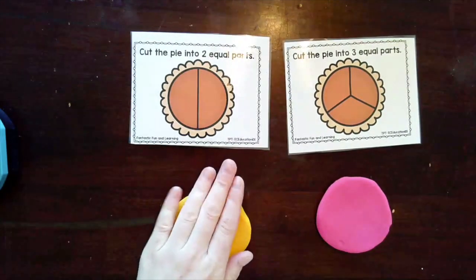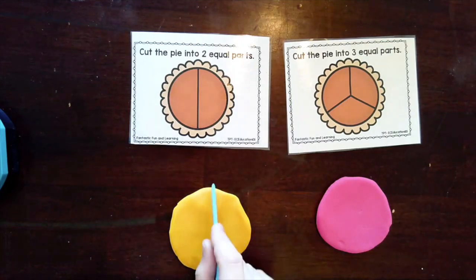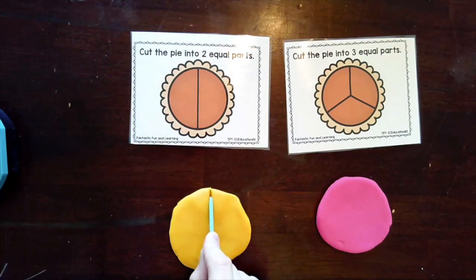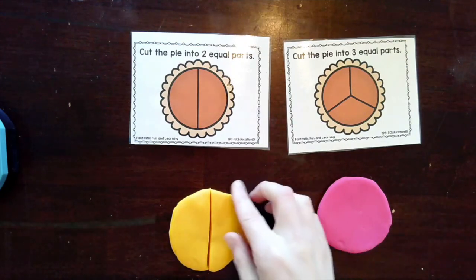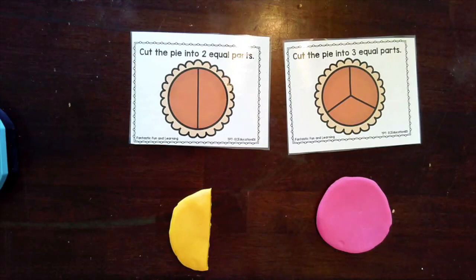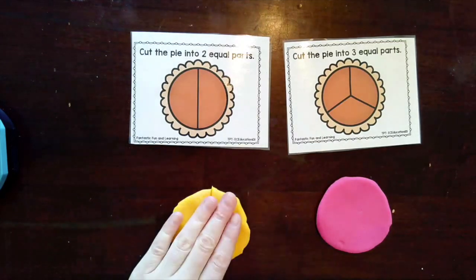Okay so let's cut this whole pie into two equal parts. We're going to do that by cutting right down the middle. If I take part away I will have half left. One half. Two halves together equals one whole.